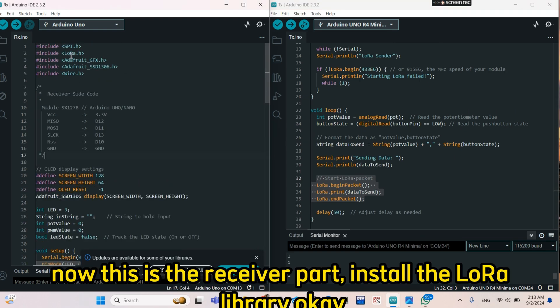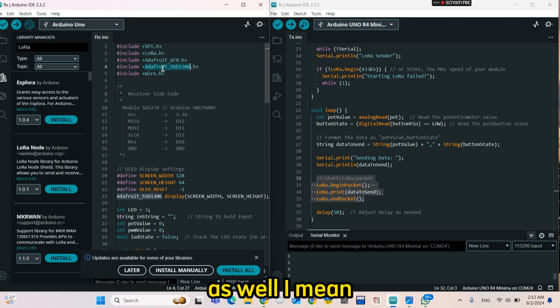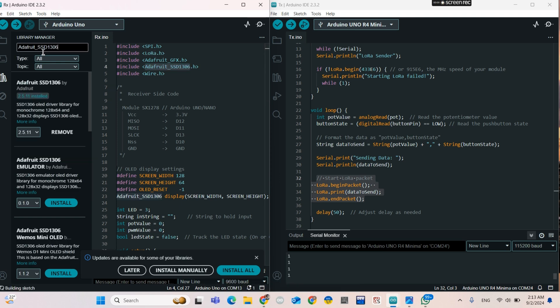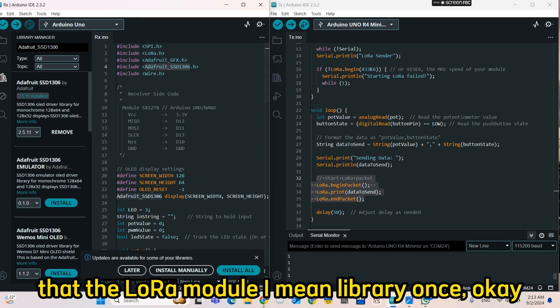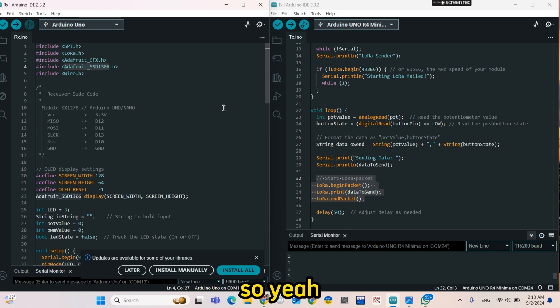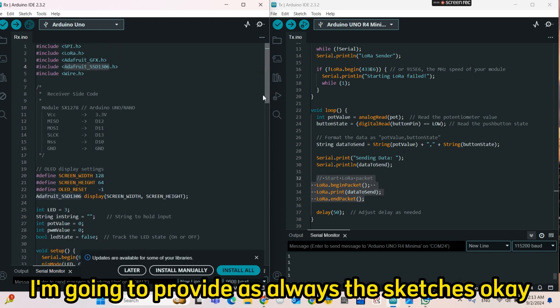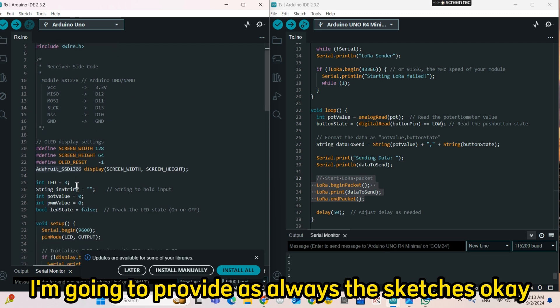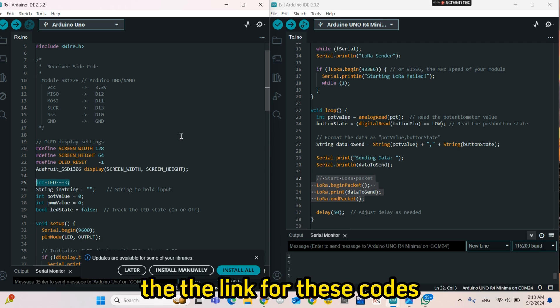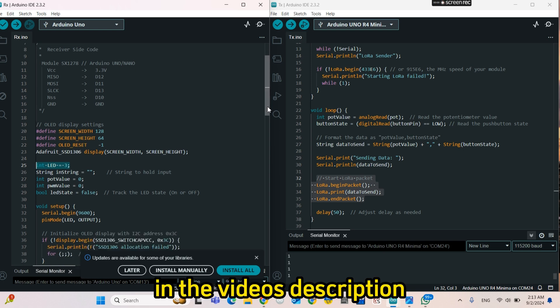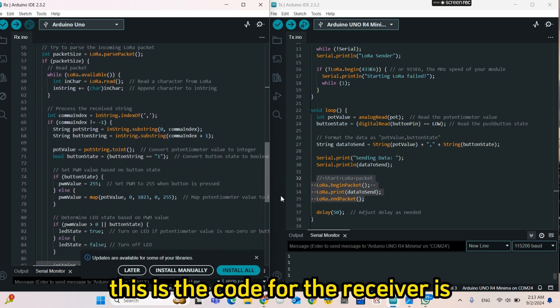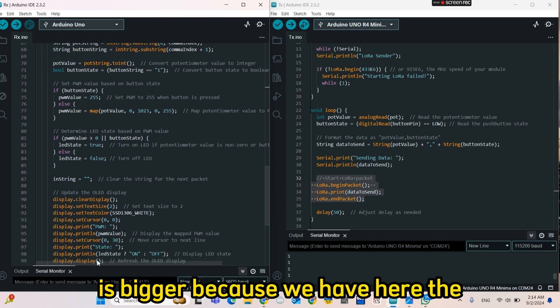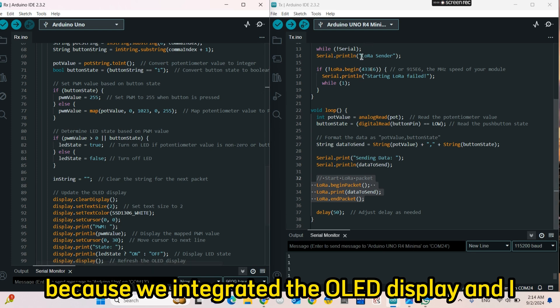Now this is the receiver part. Install the LoRa as well. You don't need - we install the LoRa library once. I'm going to provide, as always, the sketches - the link for these codes in the video's description. This is the code for the receiver. It's bigger because we integrated the OLED display.